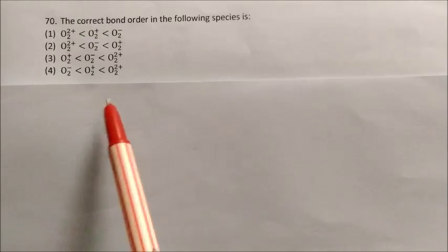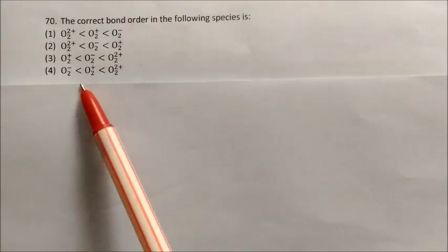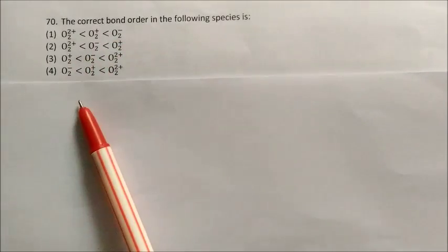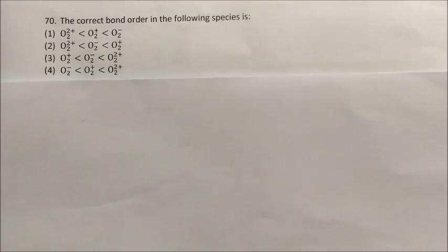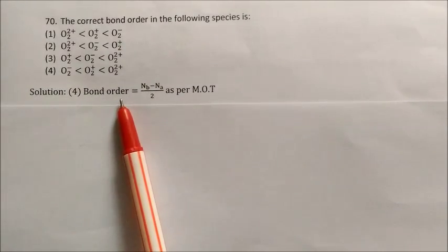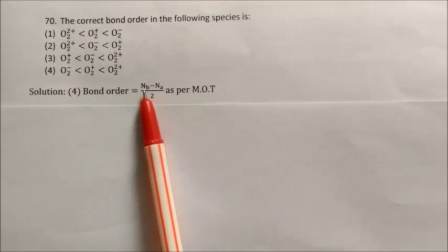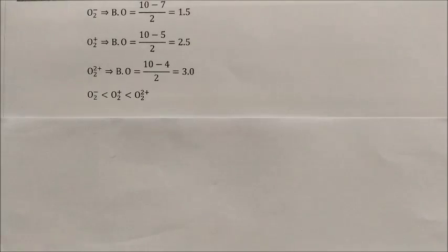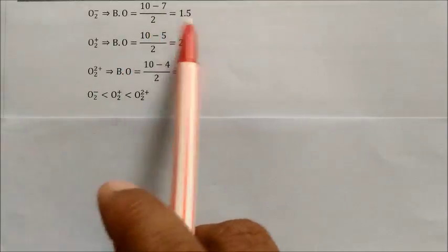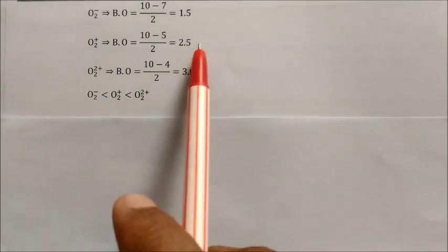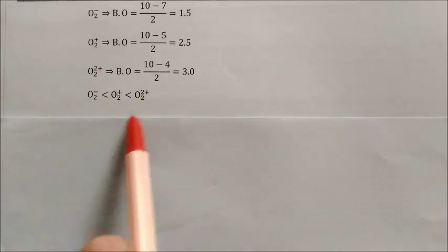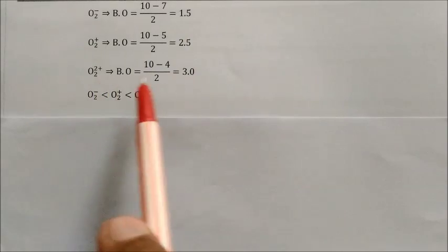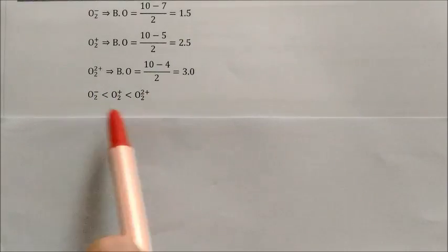Question: What is the correct bond order for O2 2+, O2+, and O2−? Using bond order = (Nb − Na)/2: For O2− — bond order = (10−7)/2 = 1.5. For O2+ — bond order = 2.5. For O2 2+ — bond order = 3. So the increasing order of bond order is: O2− (1.5) < O2+ (2.5) < O2 2+ (3).